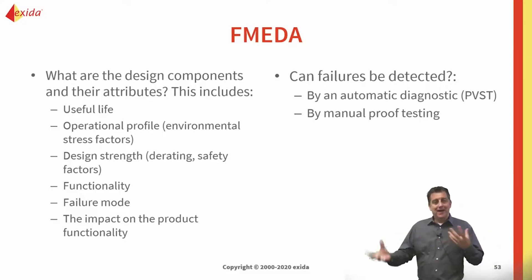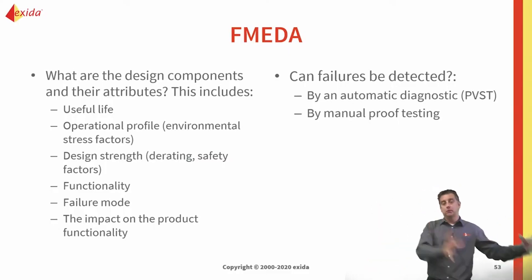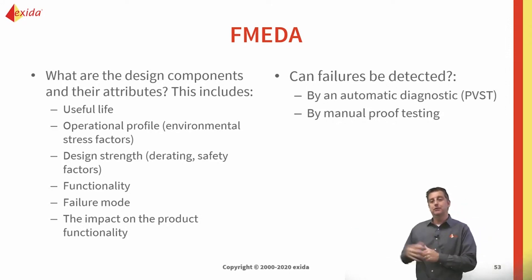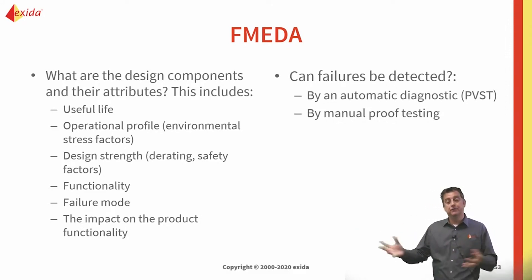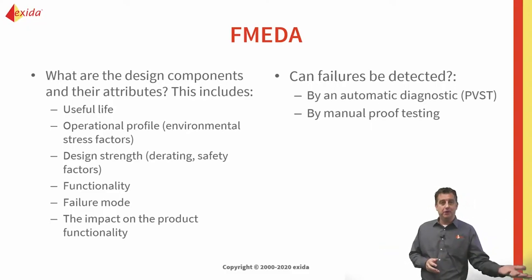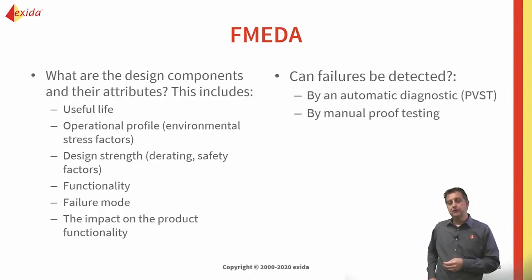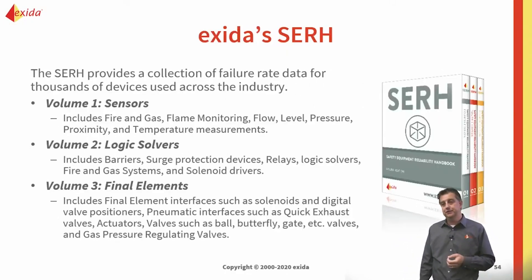We look at tests — proof tests. If I do a particular test, what components will be exercised and tested? I will be able to come up with a coverage for that particular test. It could be a partial stroke test, an automatic test, or a proof test. Those are some of the outputs we get from a Failure Mode Effect and Diagnostic Analysis.